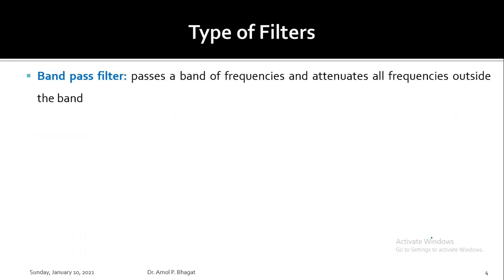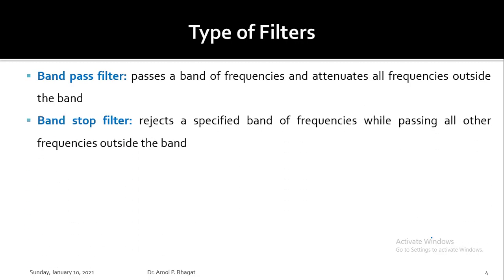A band-pass filter passes a band of frequencies and attenuates all frequencies outside the specified band. For example, frequencies from 200 MHz to 500 MHz will be passed through, while signals with frequencies below 200 MHz and above 500 MHz will be attenuated and rejected by this filter.